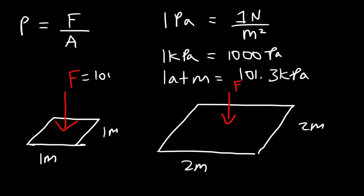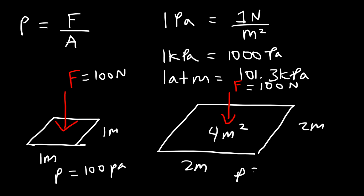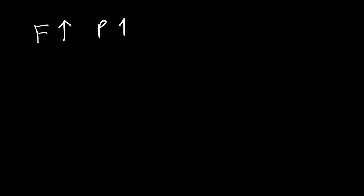If we apply a force of 100 Newtons over 1 square meter, the pressure is 100 pascals. In the second example, the area is 2 times 2, which is 4 square meters, so the pressure is 100 Newtons divided by 4 square meters, giving us 25 pascals. If you increase the force applied, the pressure increases. If you increase the area, the pressure decreases. Pressure is directly related to force but inversely related to the area upon which that force is applied.